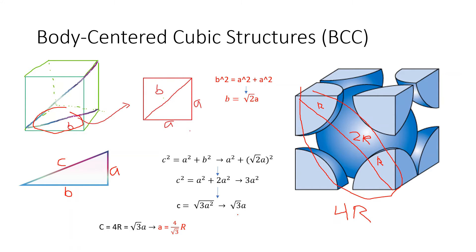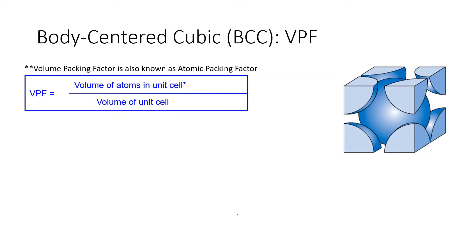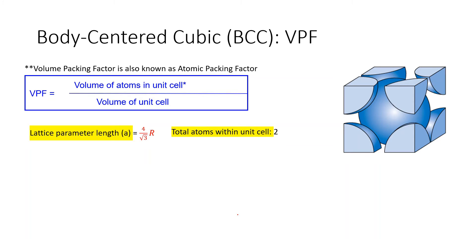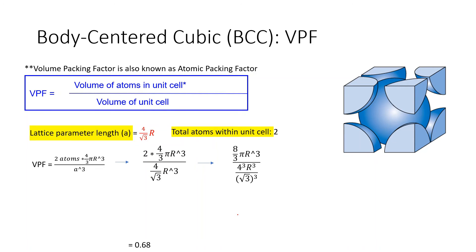With two atoms in the unit cell, the volume packing factor equals two atoms times (4/3)πr³ over a³. Substituting a = 4r/√3 and simplifying, we get approximately 0.68, meaning that for BCC, atoms occupy about 68% of the unit cell. That's all for today — thank you.